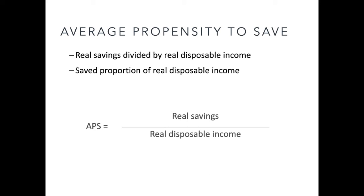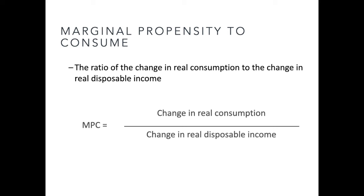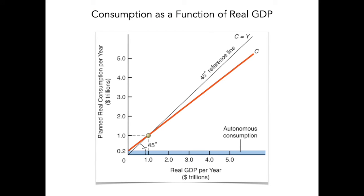Income can either be consumed or saved. The average propensity to save is real savings divided by real disposable income. The marginal propensity to consume is a third tool used in analyzing changes in the macro economy — it is the ratio of the change in real consumption to a change in real disposable income. The consumption function provides a visual graph beginning to build a model of gross domestic product, with the 45-degree line equating consumption to income.